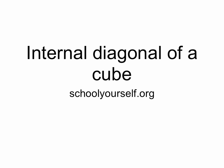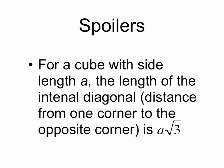Calculating the length of the internal diagonal of a cube. So for a cube with side length a, the distance from one corner to the opposite corner, which is also known as the internal diagonal, is a times the square root of 3.